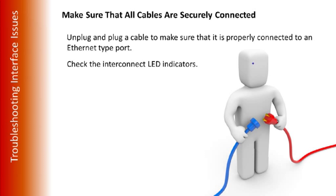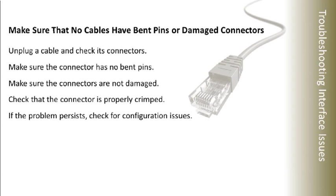Cisco wants us to remind you: check connectors for bent pins, make sure there's no damage, and ensure cables are properly crimped. Once you've checked that physical layer and everything checks out, you have to start looking at configuration issues, because now you know your physical layer is just fine.